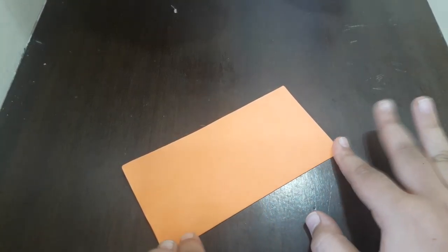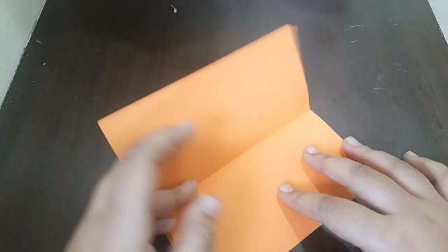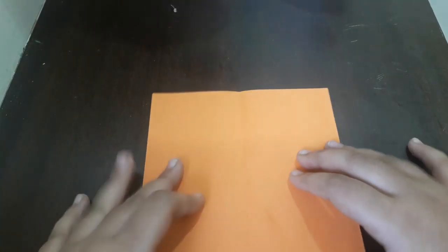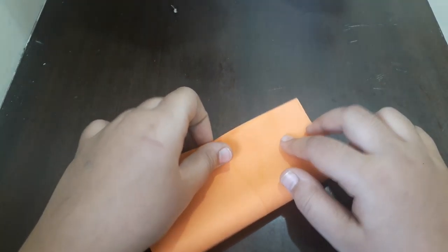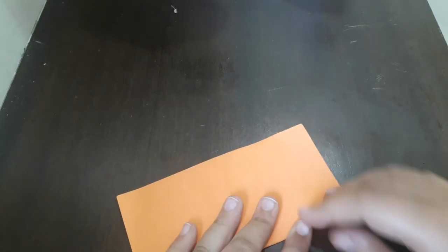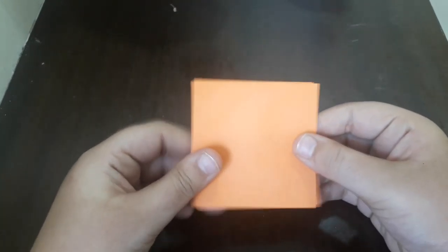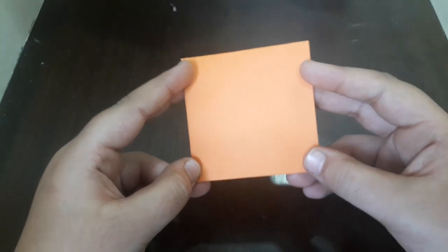You can take white paper too if you don't have colored paper available. Now open it and fold the opposite side. Close it, and you'll get a square like this.